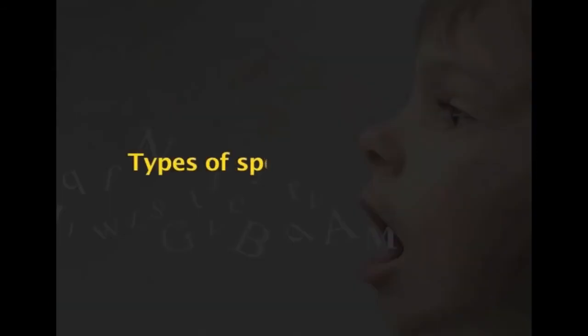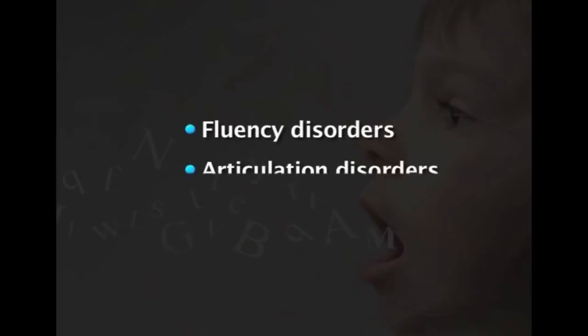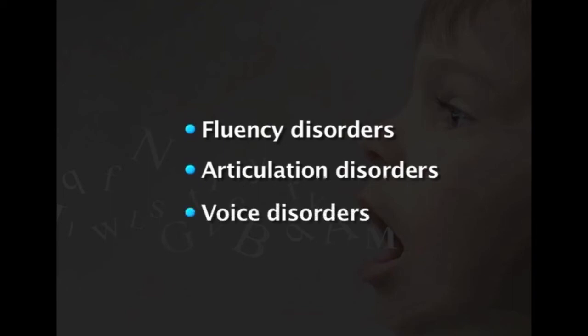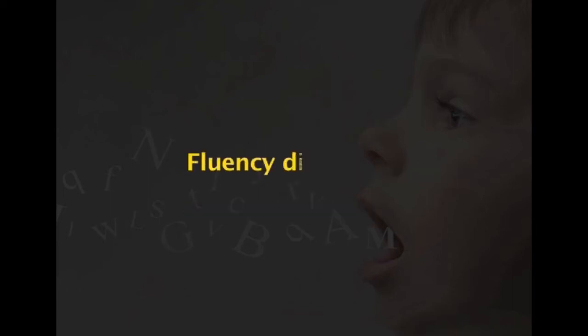Speech disorder refers to difficulties producing speech sounds or problems with voice quality. There are basically three types of speech impairment: fluency disorders, articulation disorders, and voice disorders. Fluency disorders, commonly known as stuttering, are characterized by abnormal interruptions in the form of hesitations, repetitions, or prolongations. It is a disruption in the normal flow of rhythmic speech.